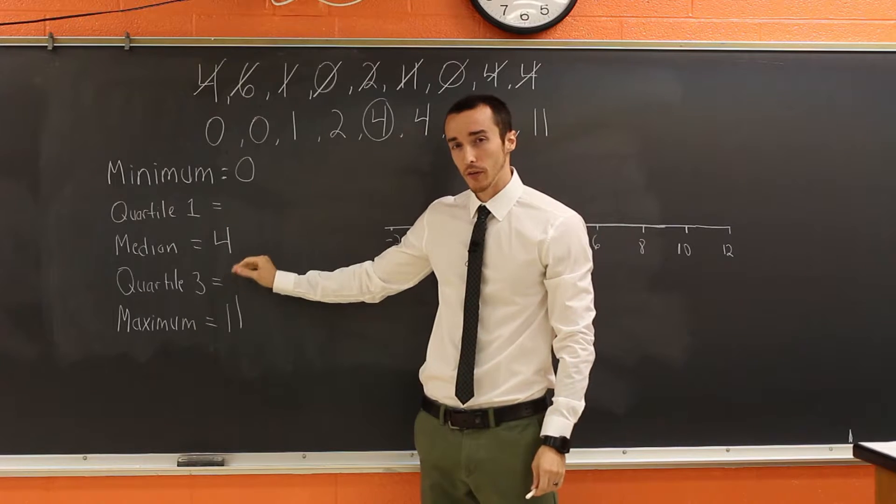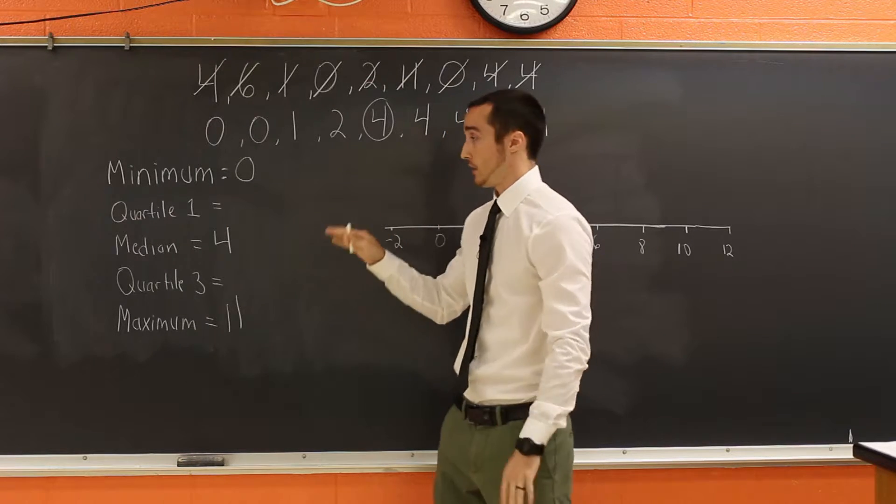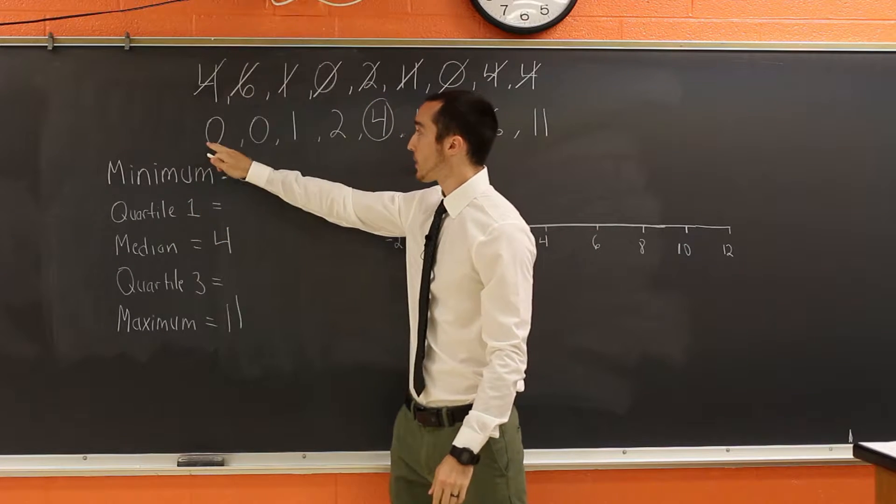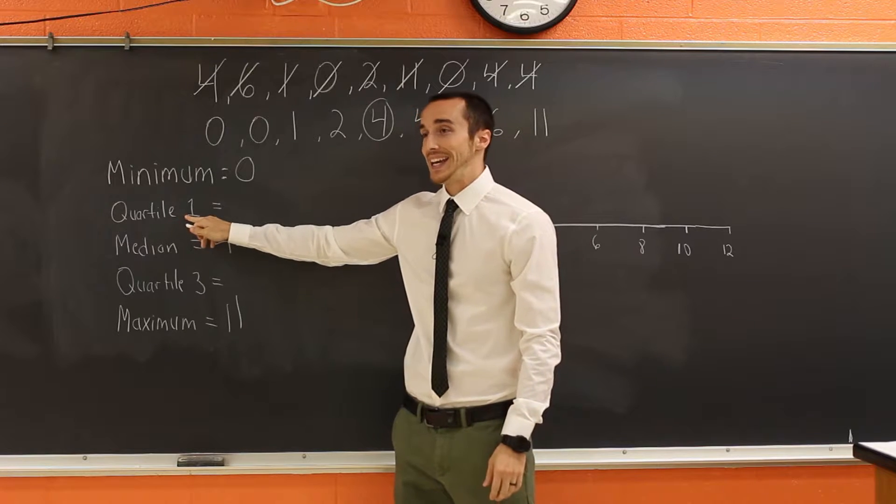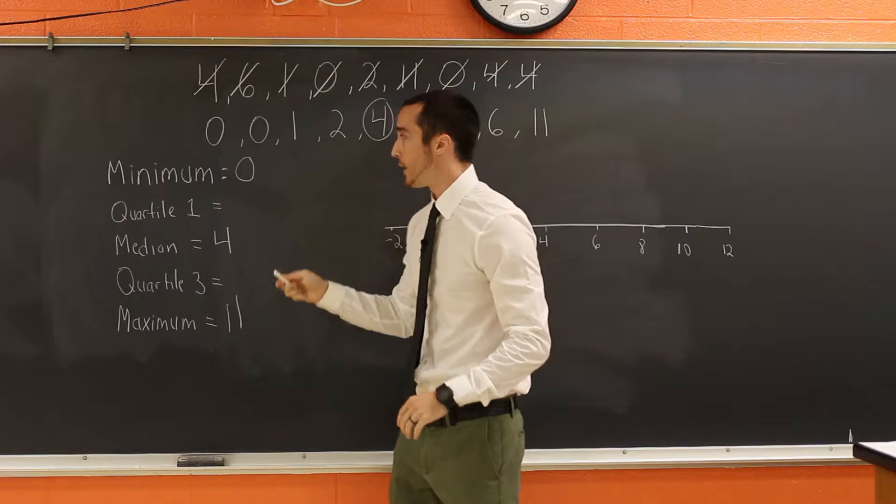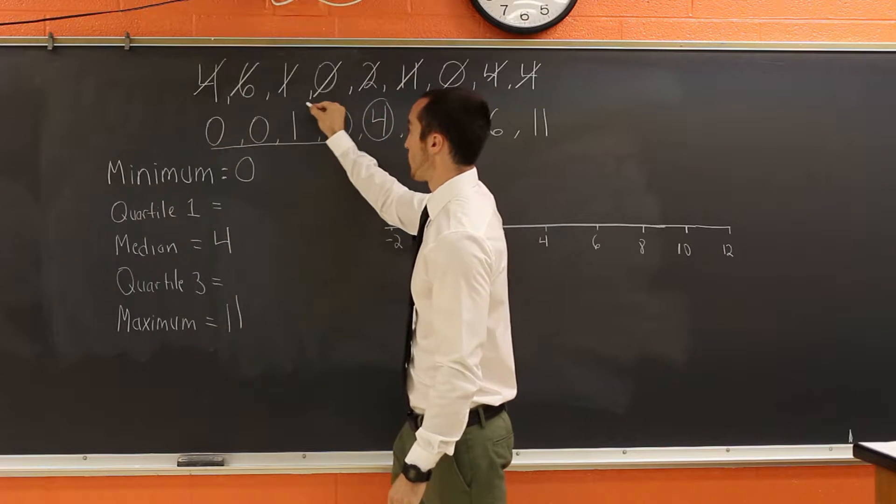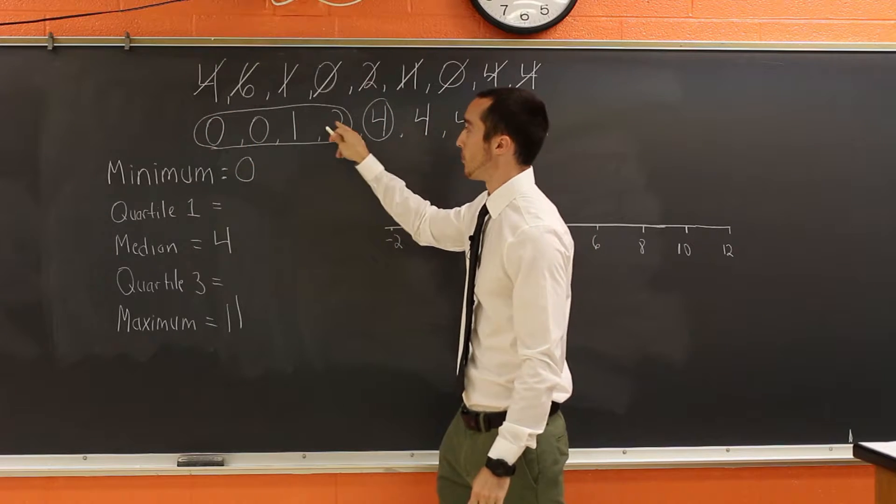Now, what about quartile one and quartile three? What does this mean? Well, if we exclude the median, so for this next part, we're not going to count the median. And we just look at the first part of the data. Quartile one is the middle or the median of the first half of your data. So in other words, remember, I'm excluding the median when I'm looking for quartile one. So I'm excluding this four and I'm just going to look at these numbers.